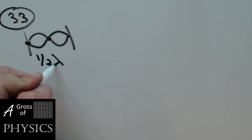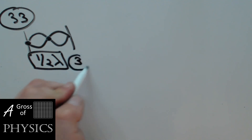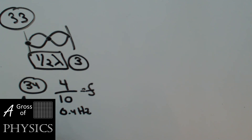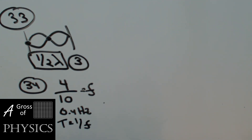Number 33: two waves interfere and produce a standing wave. How far apart are two nodes? Two nodes are half a wavelength apart. That's choice 3. Number 34: what's the period of a water wave if four complete waves pass a fixed point in 10 seconds? Frequency is 4 over 10, so 0.4 hertz. T equals 1 over F, so 1 divided by 0.4 gives 2.5 seconds. That's choice 3.